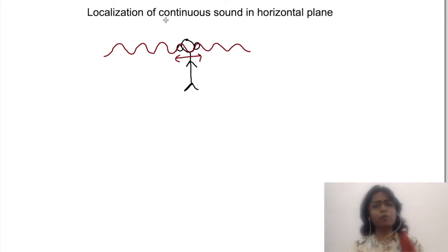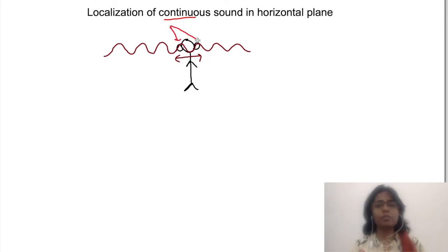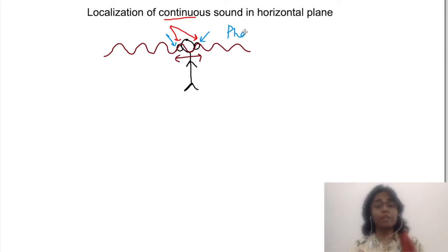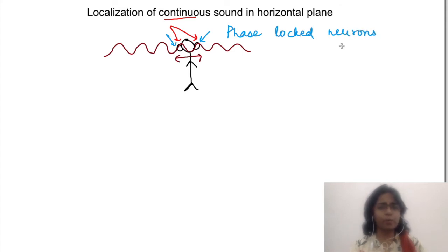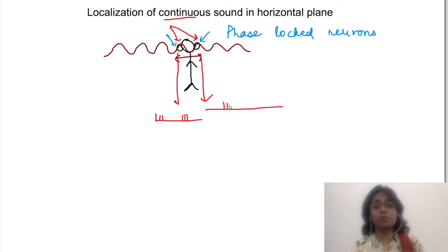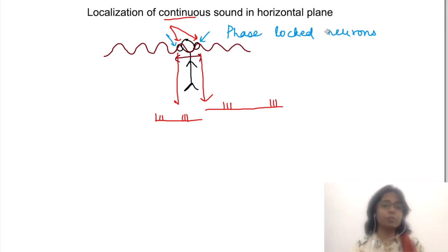How do we localize a continuous tone? The same sound reaches different ears at different phases. There are neurons which fire to different phases of the waves — this is discussed as frequency theory in another video. So depending on the pattern of responses from different ears based on the phase, localization of sound is done for a continuous tone.